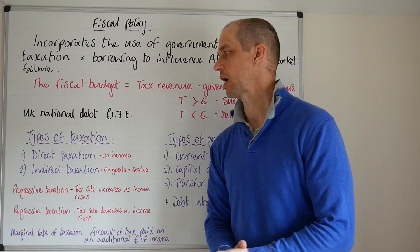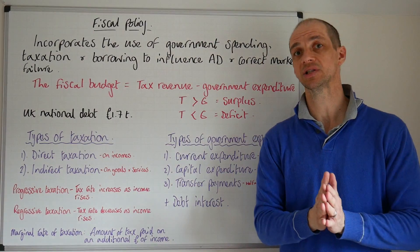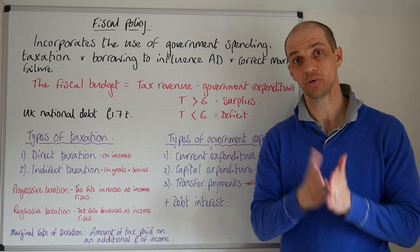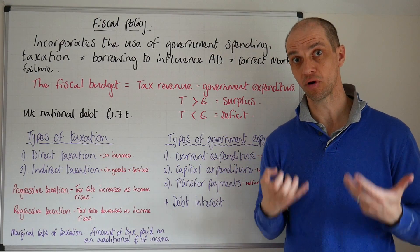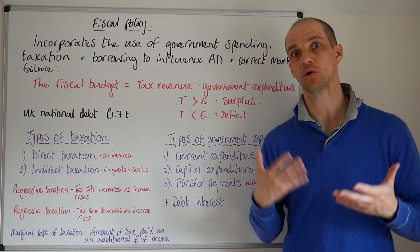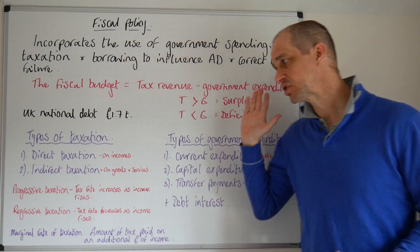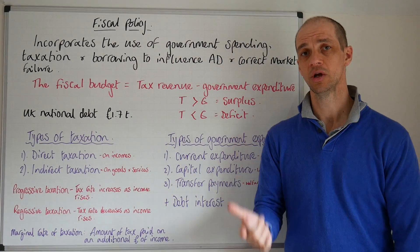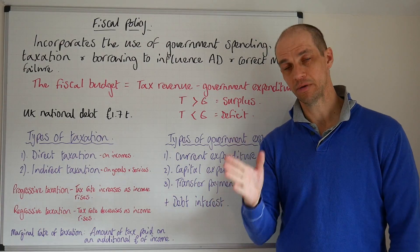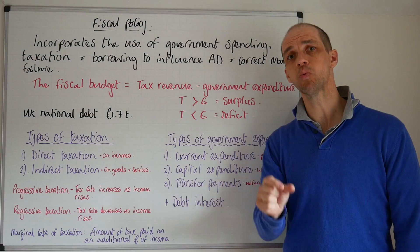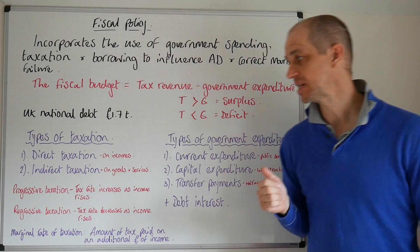Let's have a quick look at the different types of taxation that can be used. Firstly, there's direct taxation — taxation placed upon incomes, or in the case of companies and corporations, it's placed on their profits, not on their revenue, but on their final profit levels. Examples here would include income tax, national insurance contributions — which are much the same thing — as well as corporation tax.